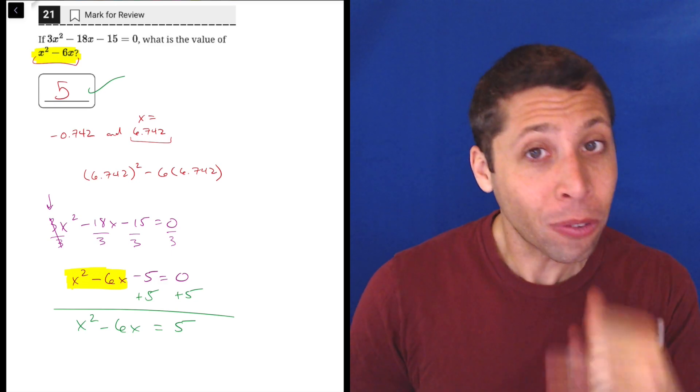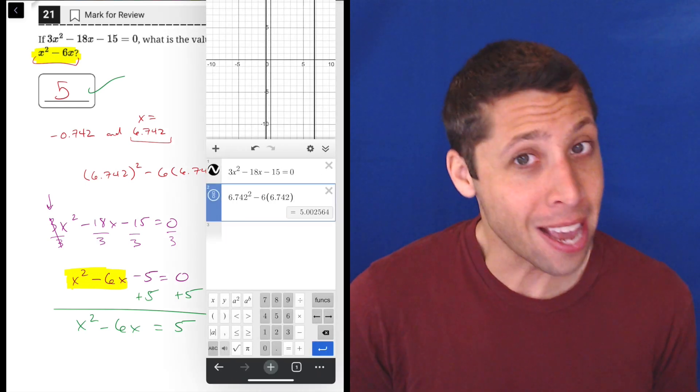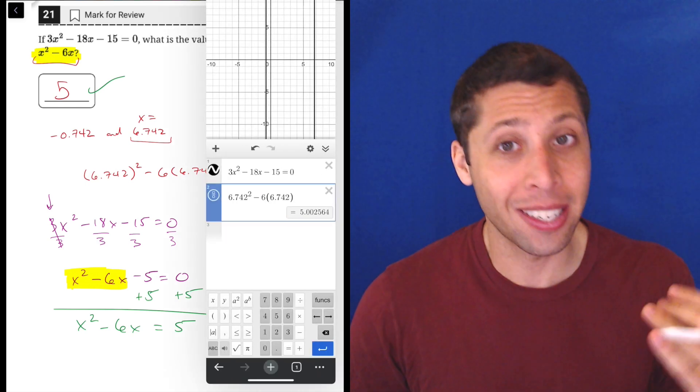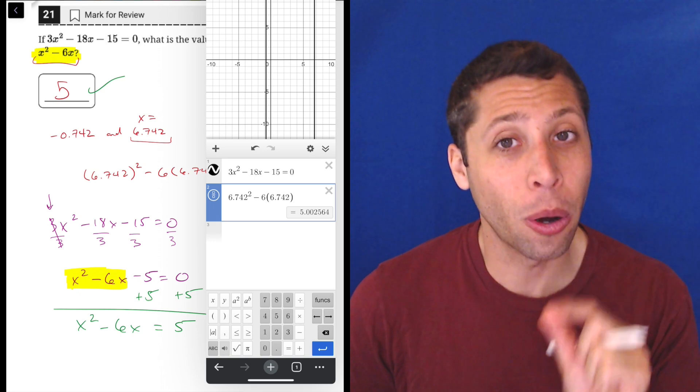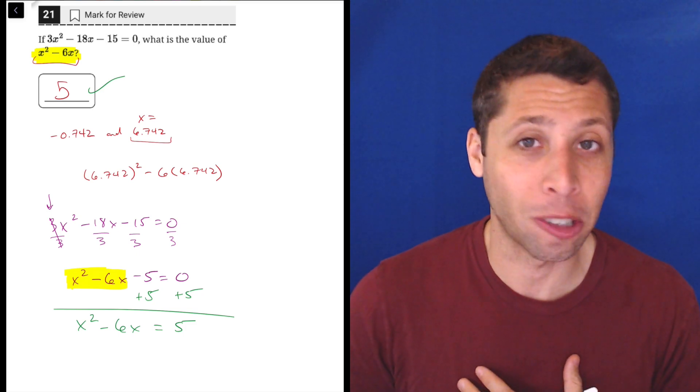That is a good strategy most of the time, but the SAT is really good at giving us these weirder situations where we need to be flexible. In this case solving for x, even with Desmos, is a bit of a pain. Even Desmos doing it gave me messy numbers that I had to adjust, and so I think it's better in this case to do the algebra.